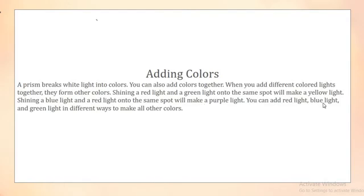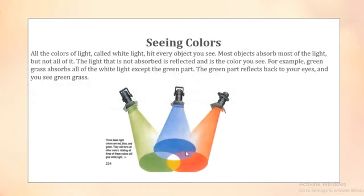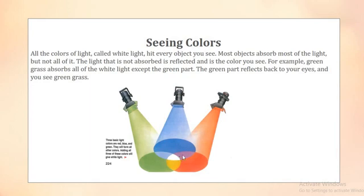You can add red light, blue light, and green light in different ways to make all other colors. The basic colors are red, blue, and green. Blue and green together make yellow. Blue and red together make orange. Blue and green can also make light blue, and we can make purple too. The ratio of the colors determines the result.